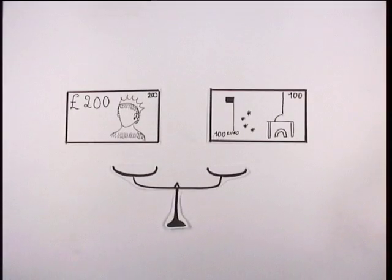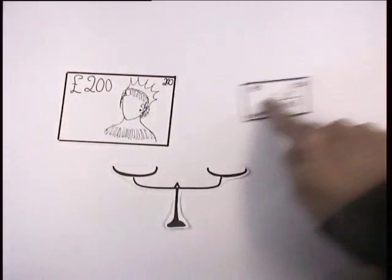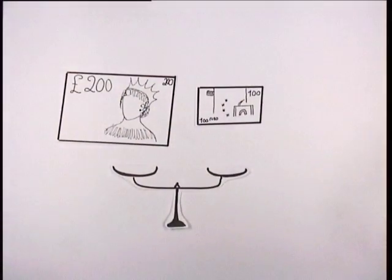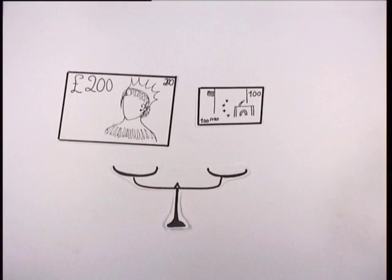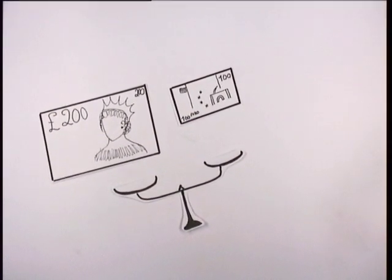As for all goods, price, here the exchange rate of a currency, is set by supply and demand. If the request of English pounds goes up against euros, an imbalance is created and the British pound's exchange rate increases. The British pound will get stronger compared to the euro.